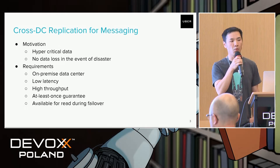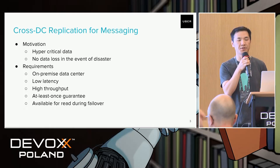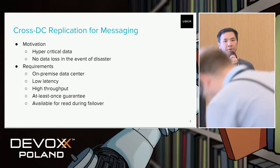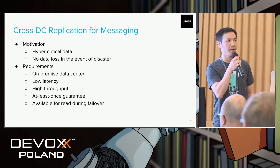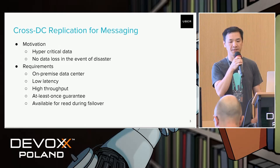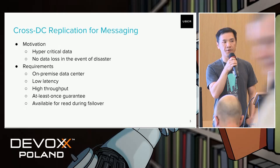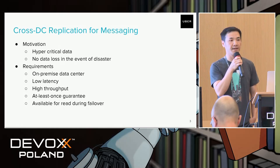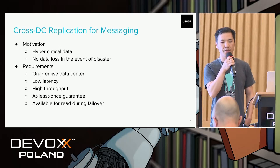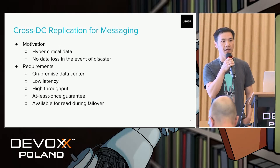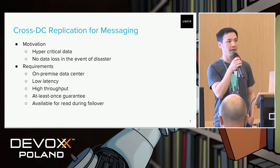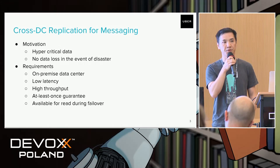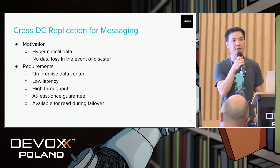So why do we do cross-DC replication? Messaging systems are very popular at Uber and are widely used by many services, including some hypercritical data use cases. For those use cases — for example, financial data or payment — we need to guarantee no data loss even in the event of a disaster. A disaster really means something like a data center sinking into the ocean; in that case we still need to guarantee no data loss.